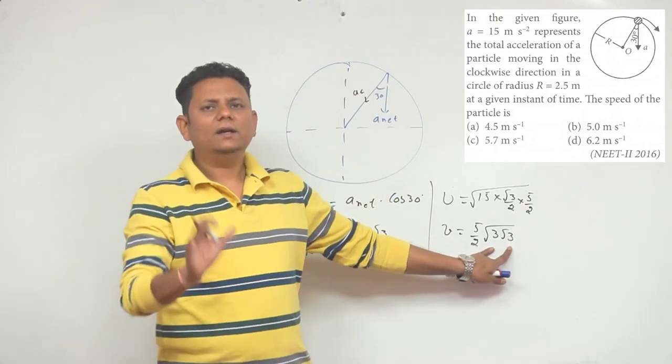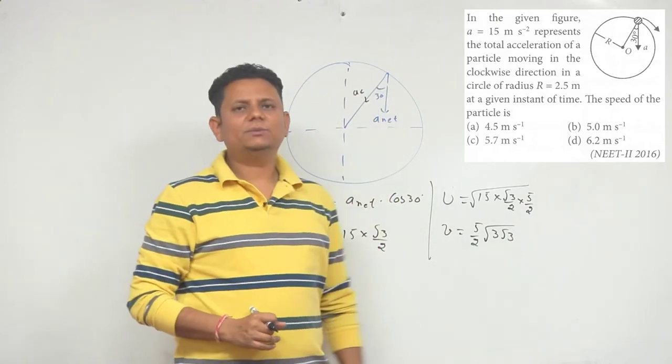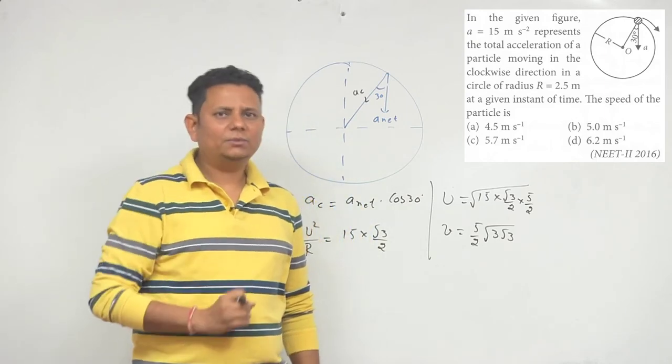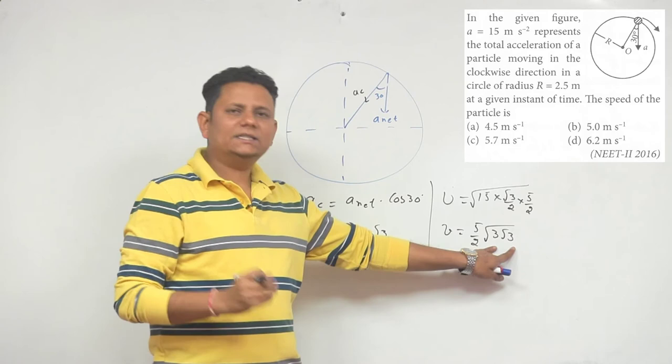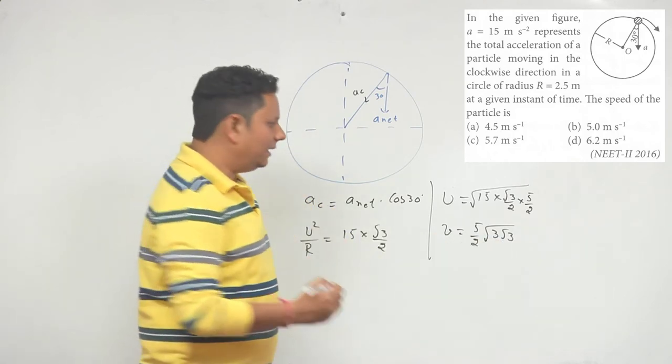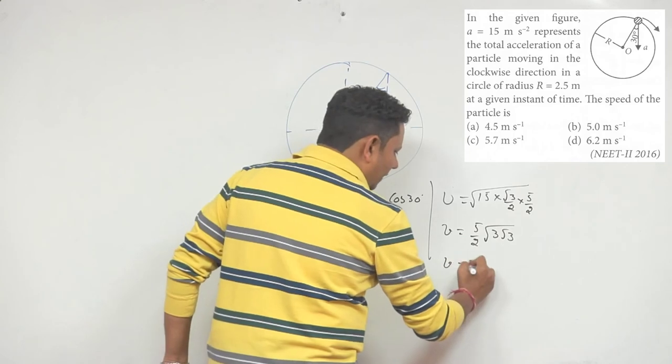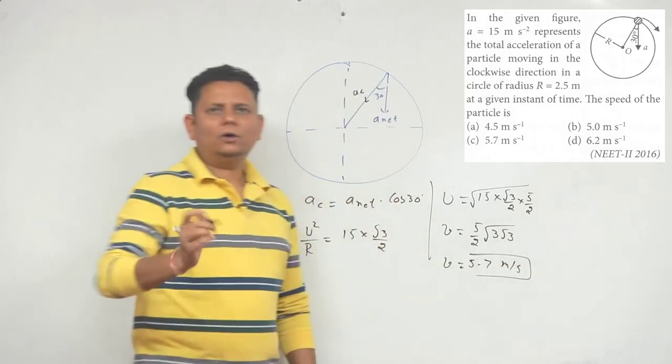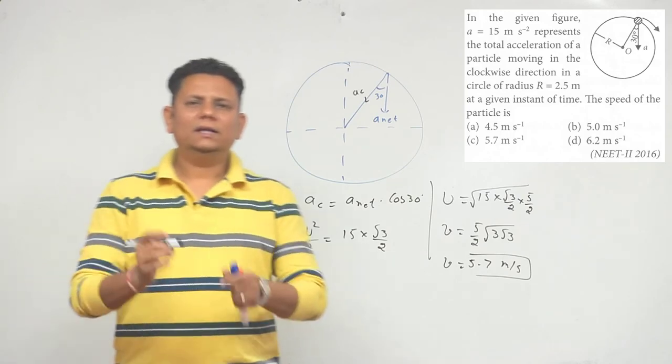This is a NEET student challenge. Many times we say we don't have experience calculating this way, but I always tell my students you will have to keep up with your math. That makes it a good question. When we calculate this value, it comes to 5.7 meter per second. So option number C would be the correct answer.